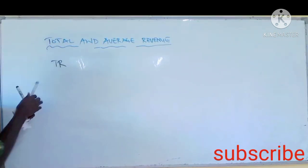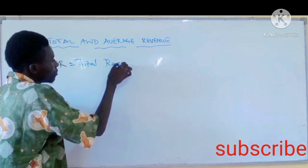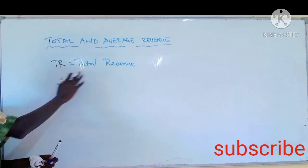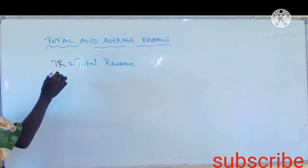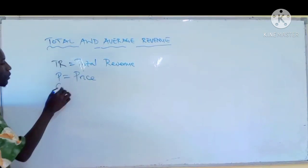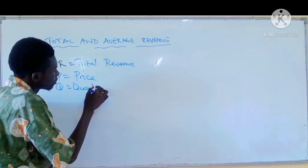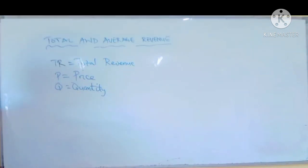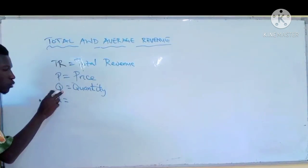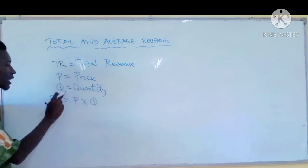TR stands for total revenue — T stands for total and R stands for revenue. We also have P, which means price, and Q, which means quantity. So TR, which is total revenue, equals price multiplied by quantity. P is for price and Q is for quantity.